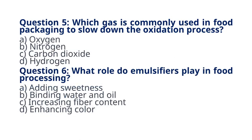Question 5. Which gas is commonly used in food packaging to slow down the oxidation process? A. Oxygen B. Nitrogen C. Carbon Dioxide D. Hydrogen. The correct answer to question 5 is option B. Nitrogen. Explanation: nitrogen is often used in food packaging to displace oxygen and slow down the oxidation of fats and other components.